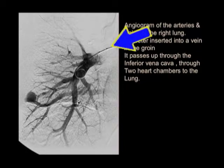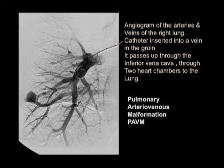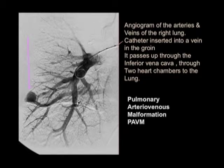This is an angiogram of the arteries and veins of the right lung. Our catheter came up from the groin, passes through the inferior vena cava, through the two heart chambers to the lung. The black stuff is dye that we're injecting, and we actually see a thing called a pulmonary arteriovenous malformation — a connection between one side of the circulation and the other, bypassing the lung.